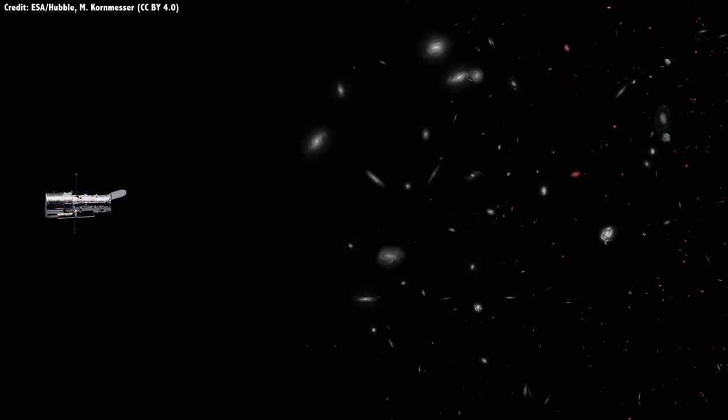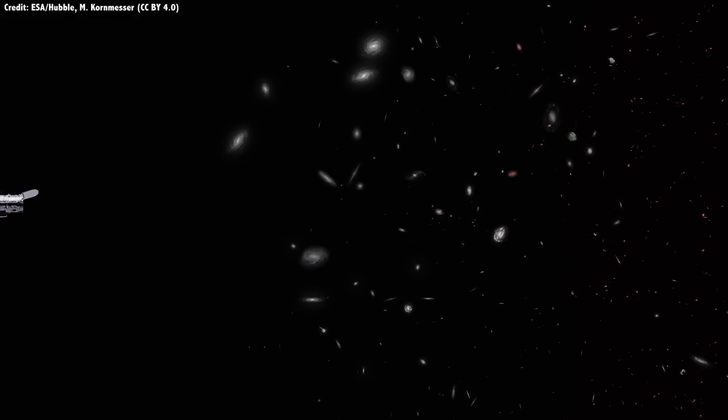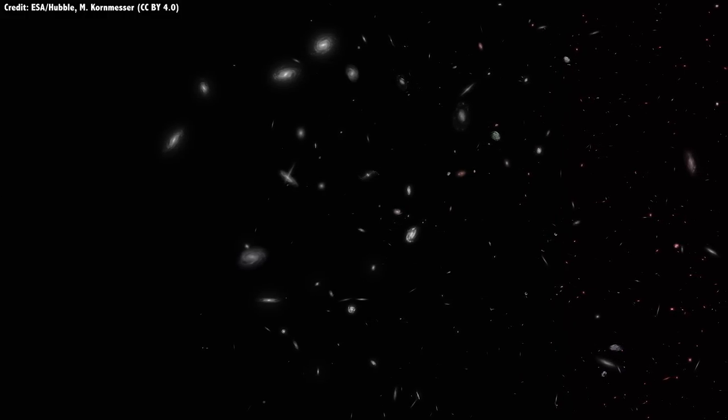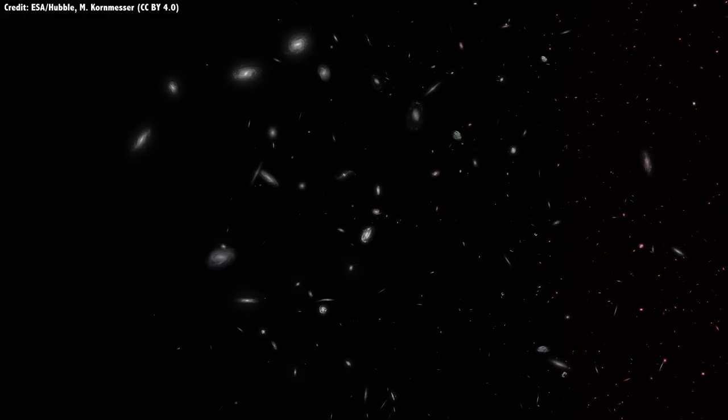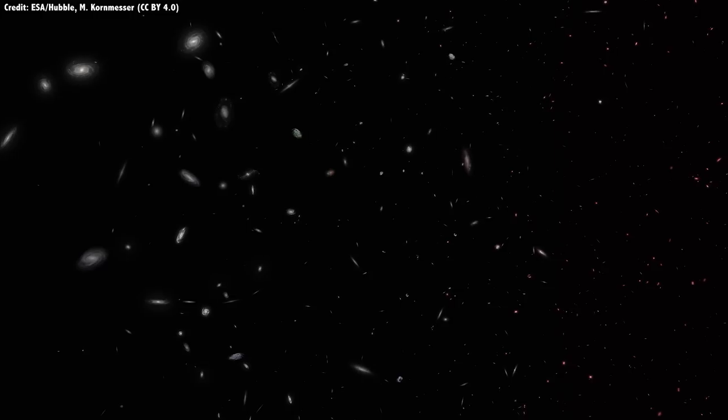But when we look out in space, we're looking back in time. And the observable universe is not the farthest that we can see, but it's the earliest that we can see. We're essentially seeing the beginning of the universe in all directions because light travels at the speed of light. And so light has been traveling for 13.8 billion years from every point that we're seeing at the edge of the observable universe.